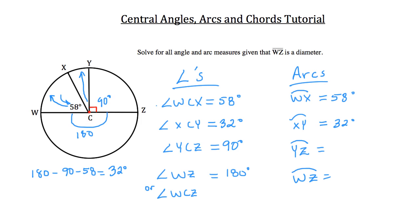Arc Y, Z is going to be 90 degrees. And arc W, Z, because it's a semicircle, is going to be 180 degrees. If you add all those up, you're going to get 360 degrees, which is the distance around any circle. So we know that we're covered here.